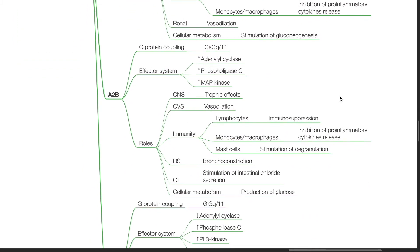A2B receptors: G-protein coupling to Gs or Gq11. Effector system is via increased adenylyl cyclase, increased phospholipase C, and increased MAP kinase. Activation of A2B produces trophic effects in the CNS, vessel dilation in the CVS. In the immune system: immune suppression of lymphocytes, inhibition of pro-inflammatory cytokine release from monocytes or macrophages, and stimulation of degranulation amongst mast cells. In the respiratory system: bronchoconstriction. Activation of A2B stimulates intestinal chloride secretion and there is increased production of glucose.